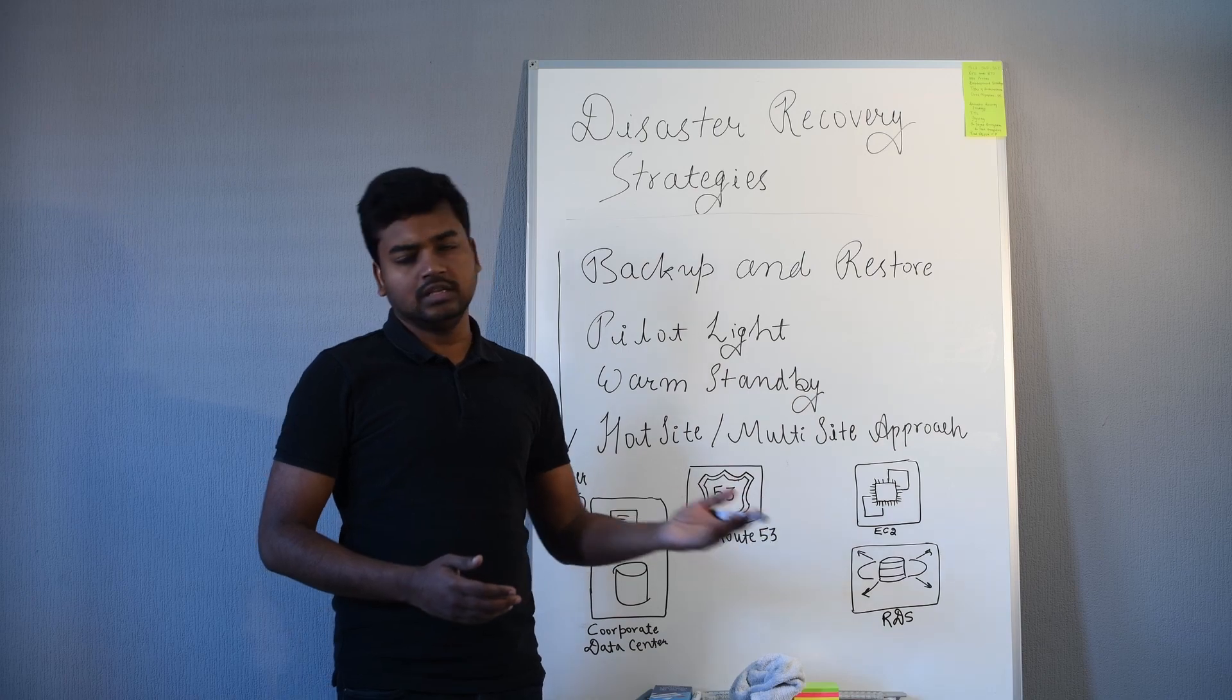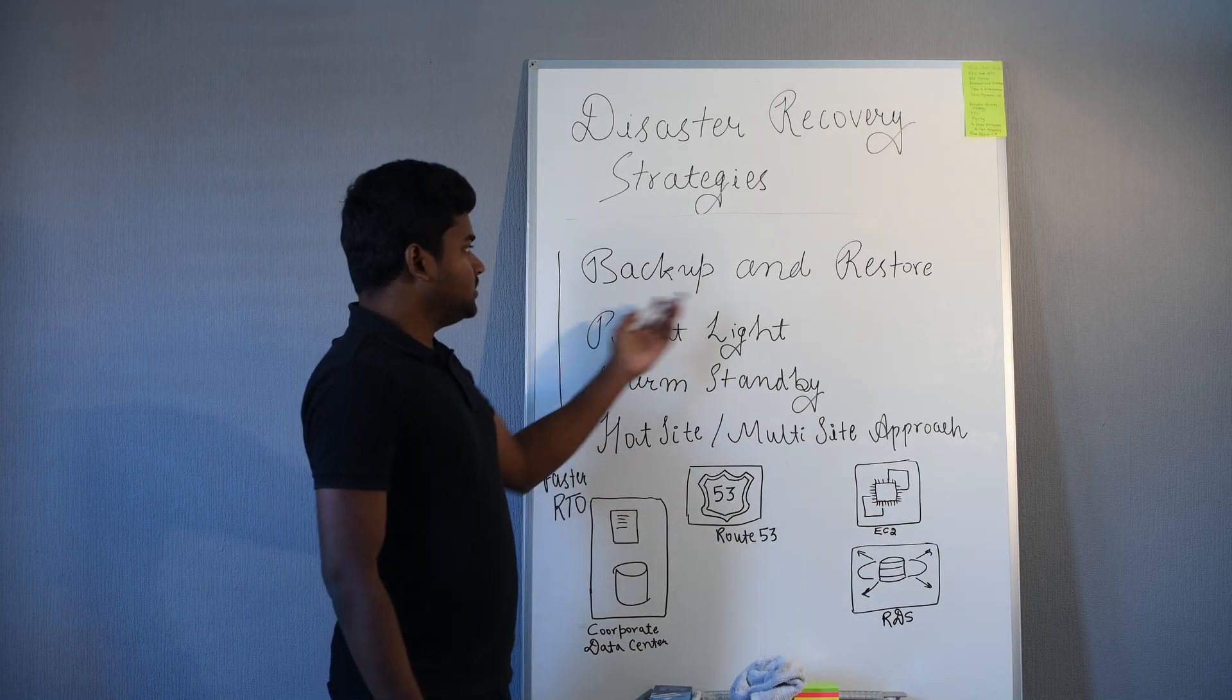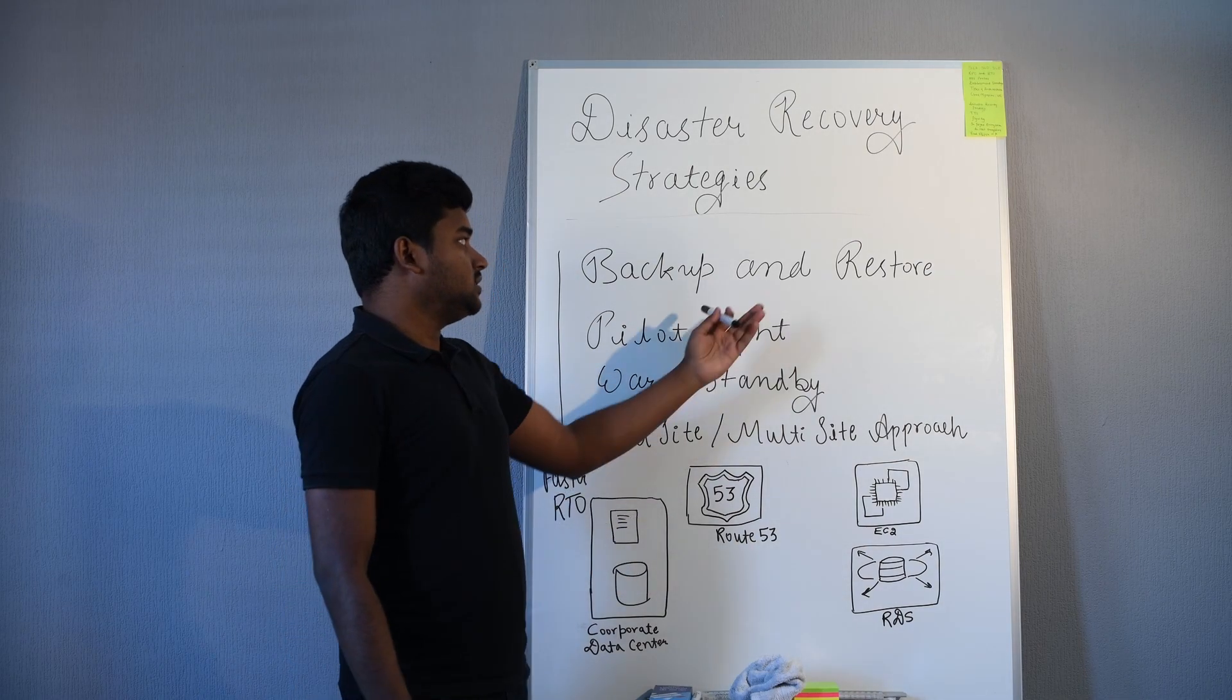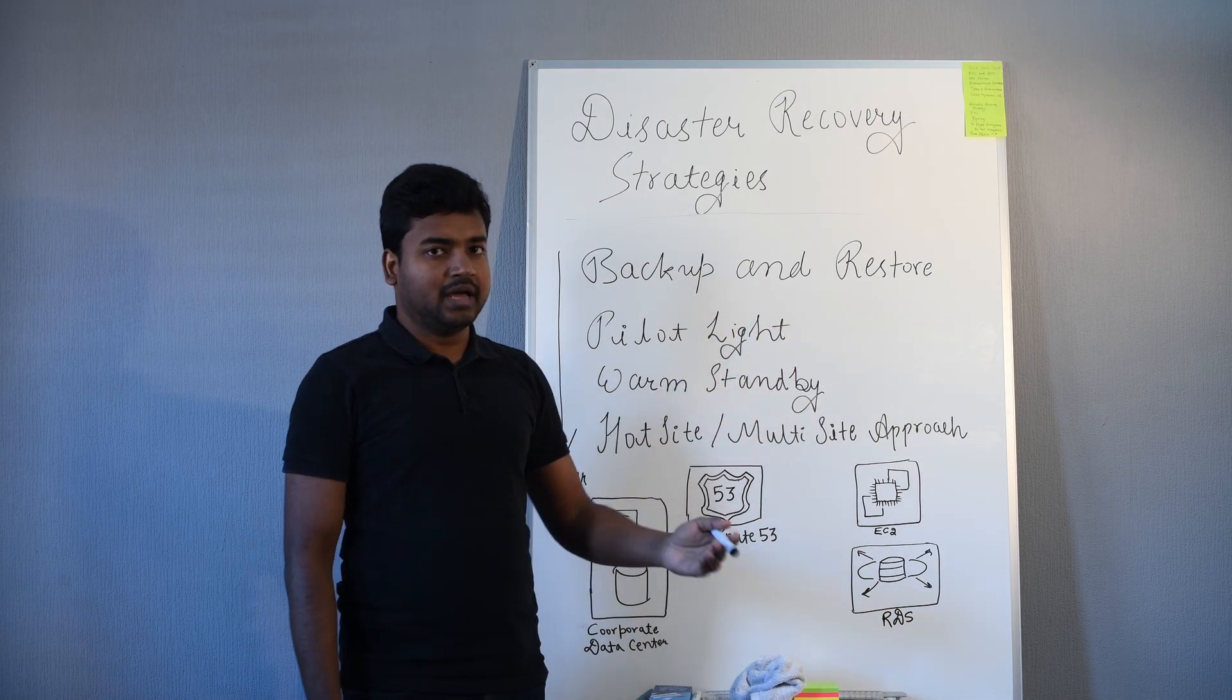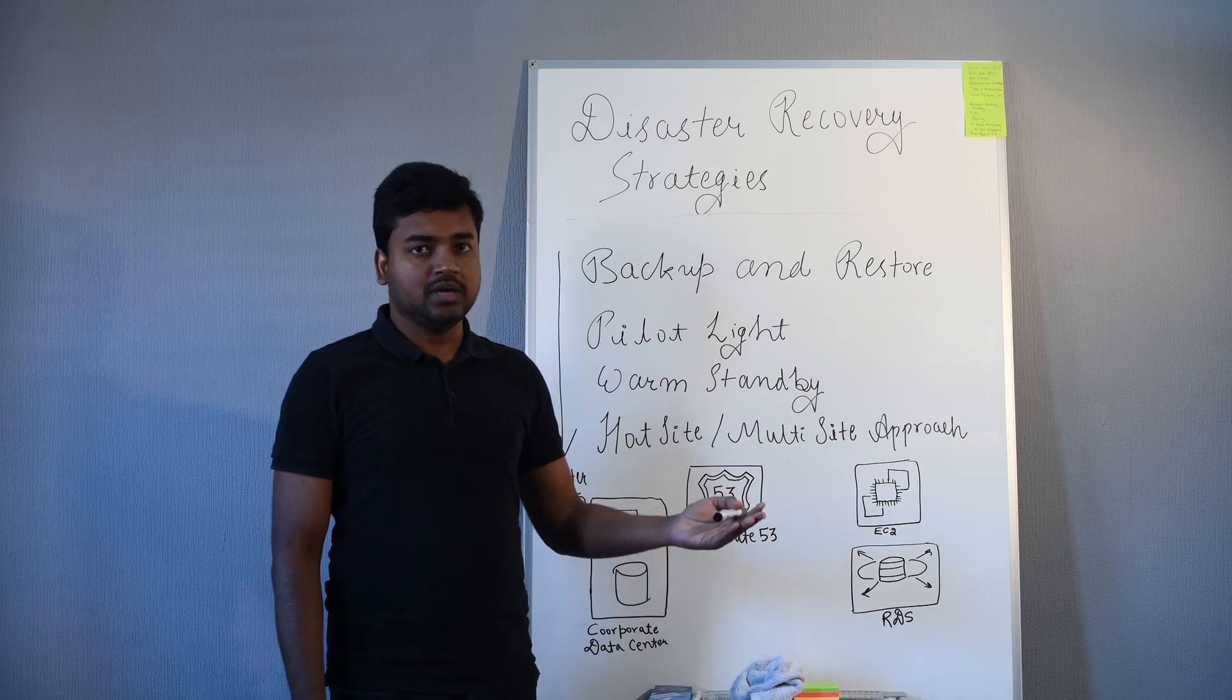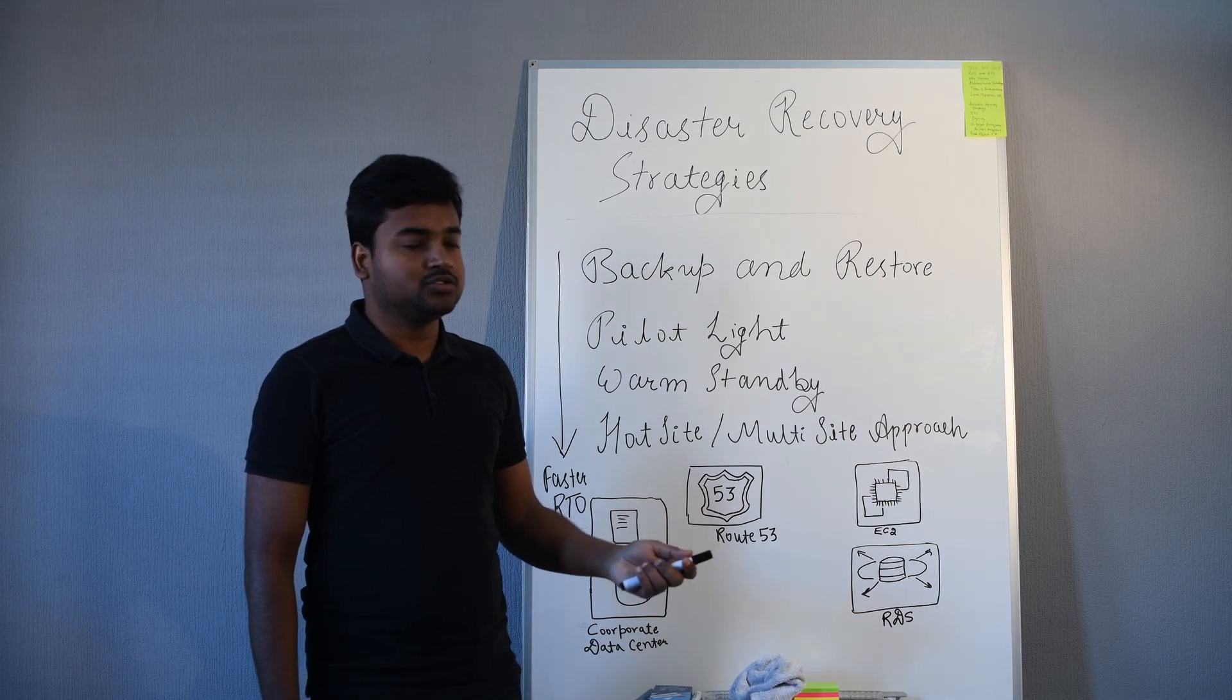When any disaster happens, they just restore from that backup. They launch or spin off new EC2 machines, the database, RDS database, and so on. This is what they do in backup and restore.